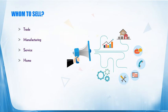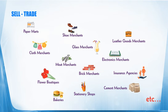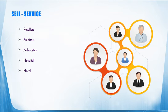Where can you sell? Selling can be done for traders, manufacturers, service people, and home. Traders are people who act as middlemen, getting products from a manufacturer and sending it to the end user — somebody like a shoe merchant, glass merchant, meat merchant, brick merchant, cloth merchant, electronic merchant, cement merchant, paper agencies — every such person is a trader. Services include auditors, doctors, advocates, hotels, resorts — every single individual or organization who gives intangible products is called a service-based industry.